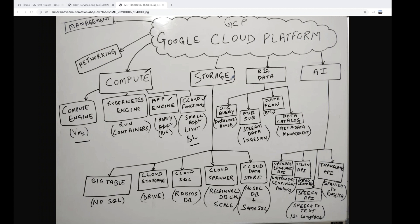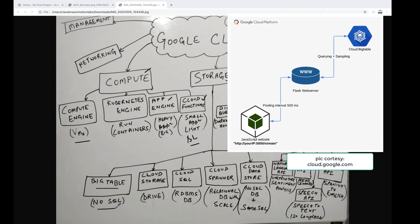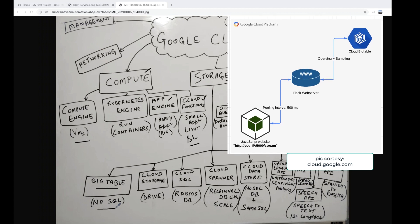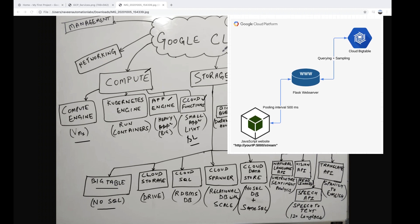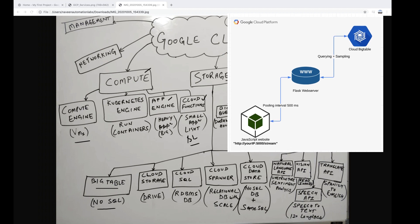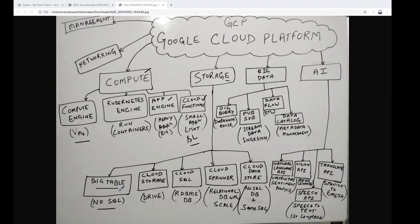The second part is storage, which is divided into multiple important sections. First is BigTable — if you need a NoSQL database implementation where you're not concerned about ACID rules, you can go with BigTable. NoSQL databases include Cassandra and MongoDB; similarly, BigTable is a NoSQL database provided by GCP's Google Cloud development team to maintain data in NoSQL form.